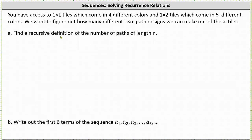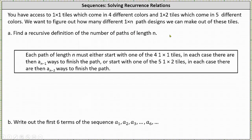For part a, we're asked to find a recursive definition of the number of paths of length n. Each path of length n must either start with one of the four one by one tiles, in which case there are a sub n minus one ways to finish the path, or start with one of the five one by two tiles, in which case there are a sub n minus two ways to finish the path.